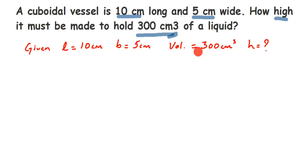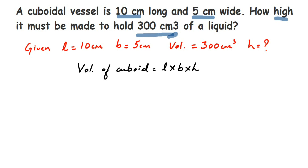Volume of cuboid is equal to length into breadth into height. We substitute the values: volume is 300, length is 10, breadth is 5, and height is unknown. So 300 is equal to 10 into 5, which is 50, multiplied by height.